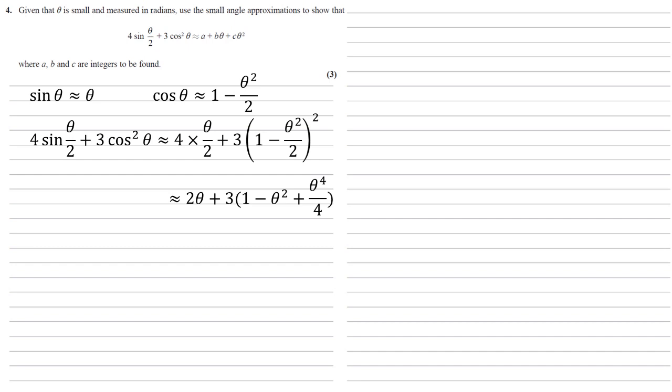Now looking at what we're aiming for, there's no θ⁴ there—it stops at squared. This is because we're dealing with small angles, so if you've got a really small angle raised to the power of 4, it gets even smaller, so small that it's negligible. We're going to cancel that out.